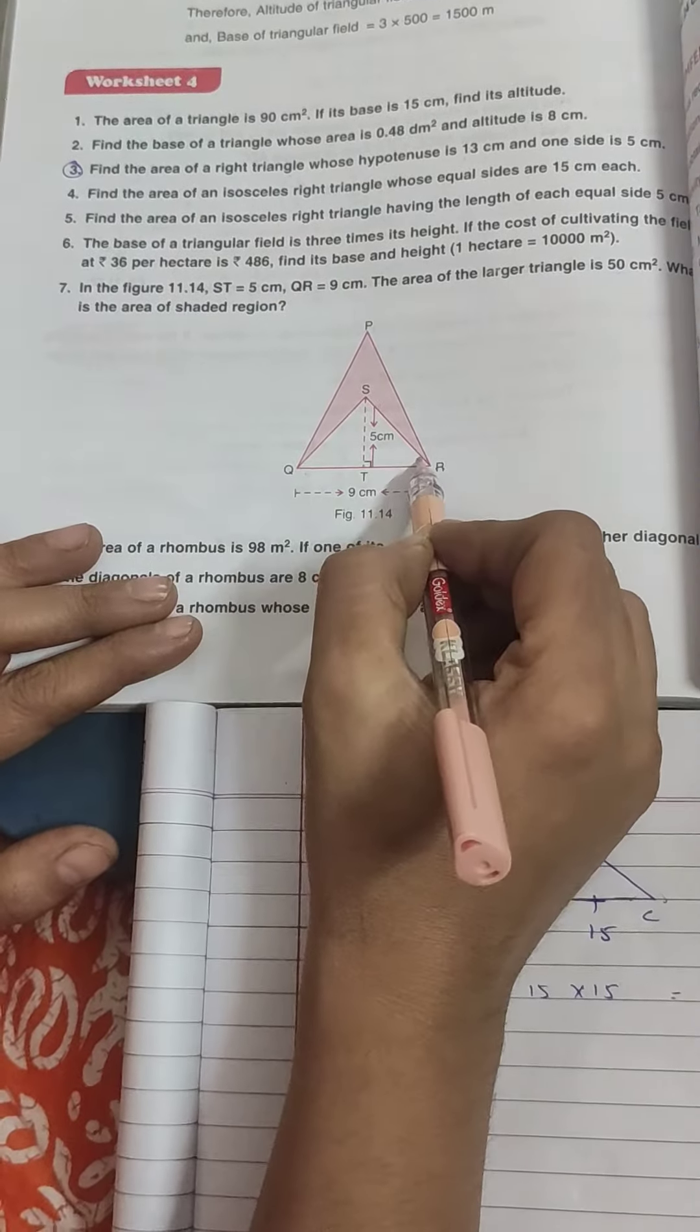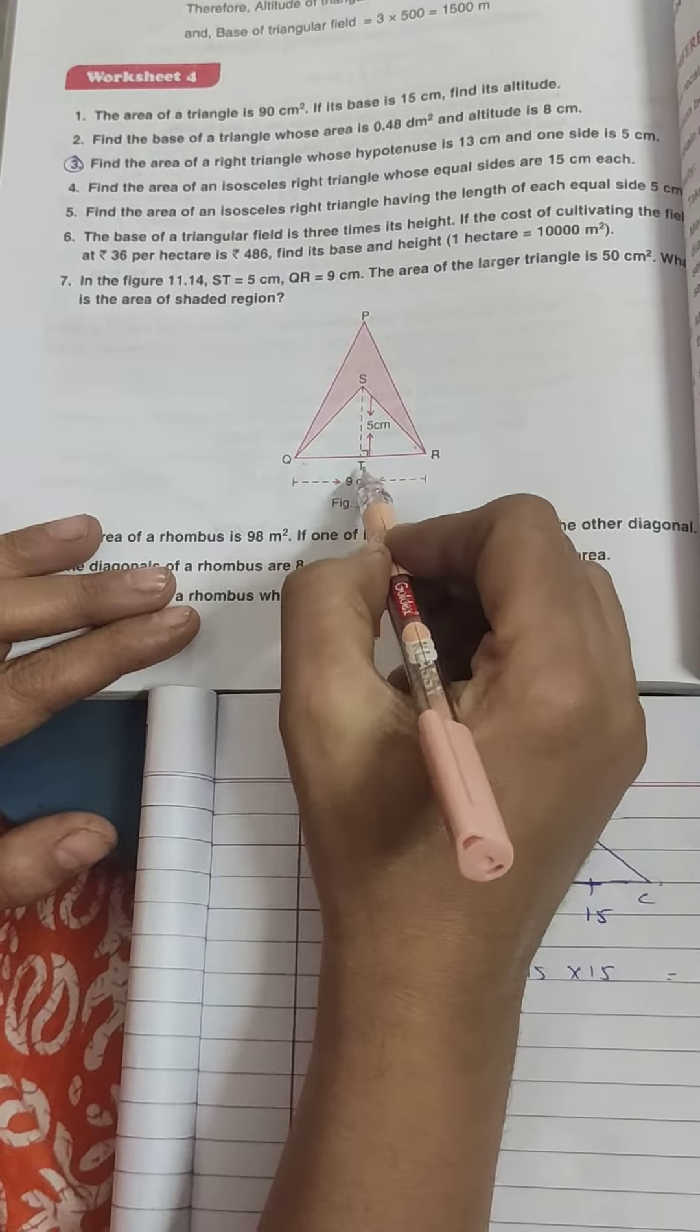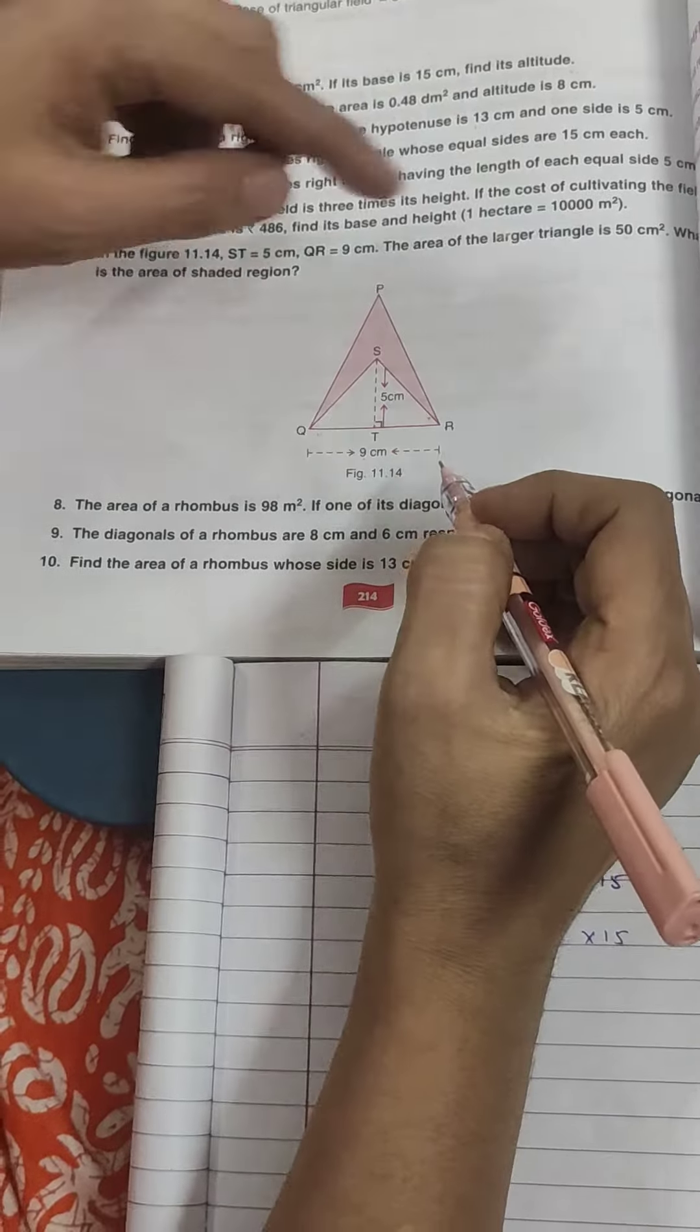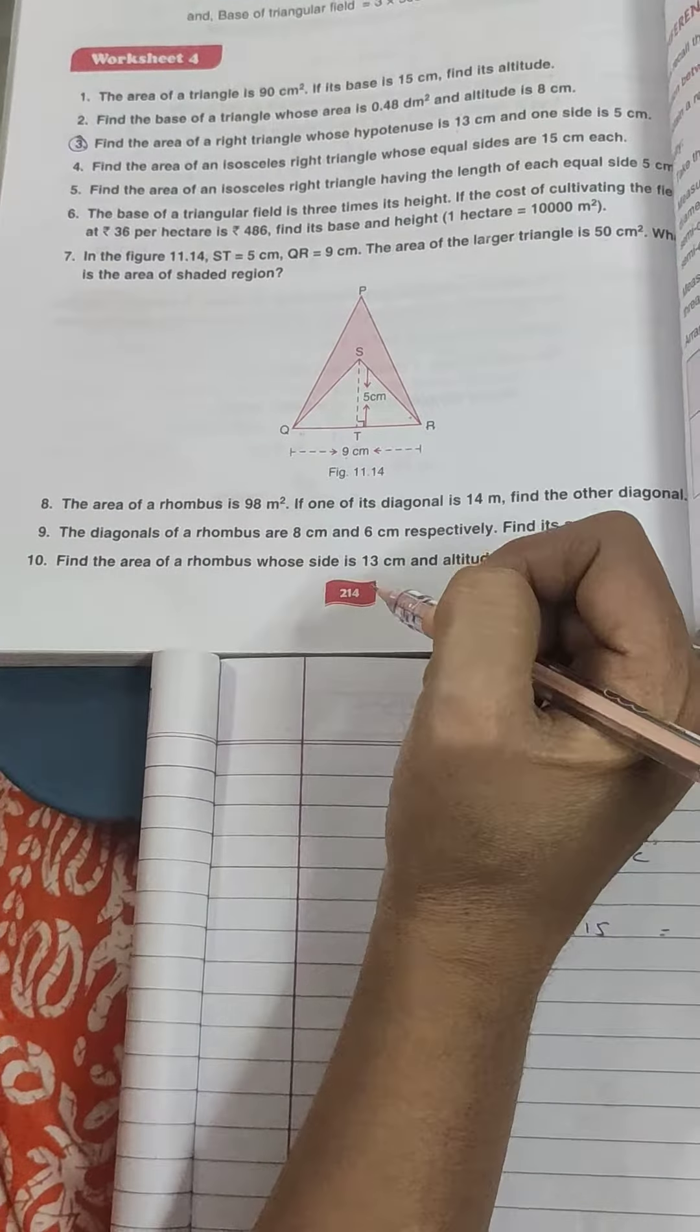And this triangle is height and waist. So you have 5 into 9. This triangle area has gone. You have to minus 50, then you will answer your answer.